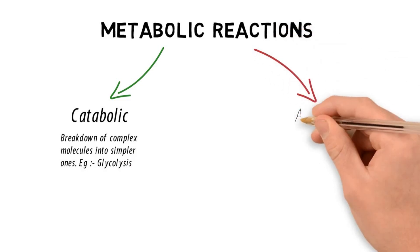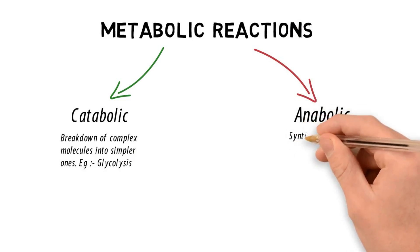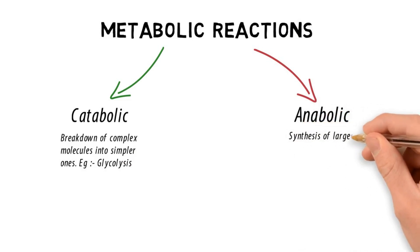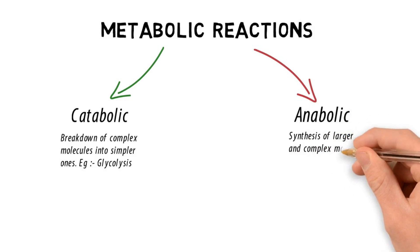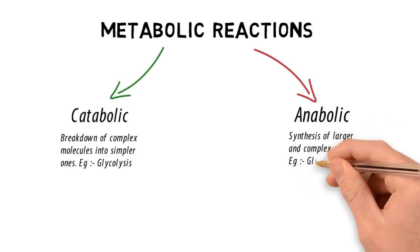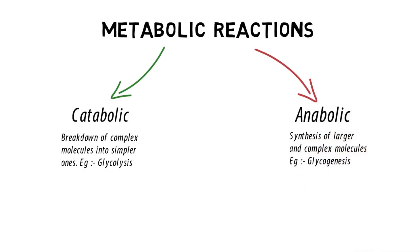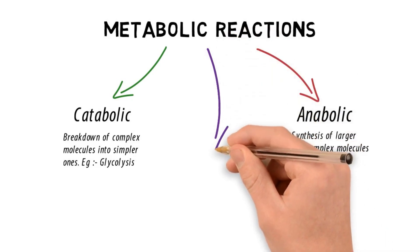Second one is anabolism or the anabolic pathway. It is the synthesis of larger and complex molecules from simpler ones. Basically, the opposite of catabolism. A classical example being glycogenesis or the synthesis of glycogen from glucose.